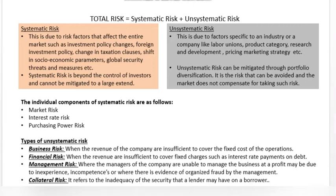Systematic risk is called non-diversifiable risk. Basically, the investor cannot mitigate this. Suppose you are an investor and you want to purchase a company — an earthquake came, the company's production was disturbed, the building was damaged, machines were damaged, and the workers were also harmed. The market does compensate you for taking systematic risk, but the investor should keep in mind that such risk is always possible.